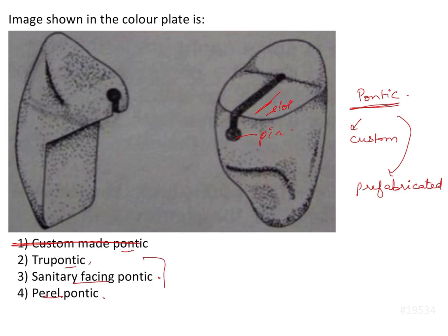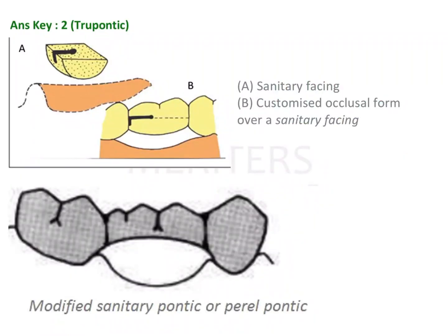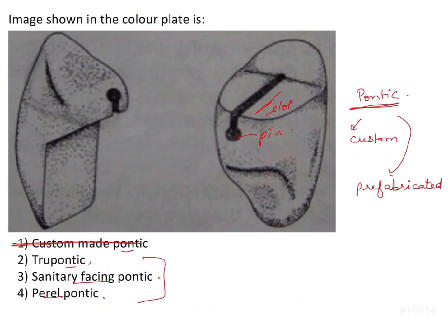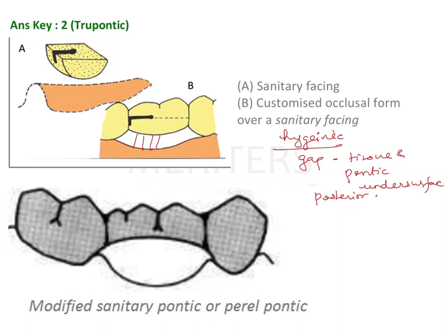That leaves us with true pontic, sanitary facing, and peril pontic. In a sanitary facing pontic, 'sanitary' means hygienic — it has a gap between the tissue and the pontic undersurface, meaning it is used only for posterior areas. In the image we can see an incisor or a canine, which is an anterior tooth.